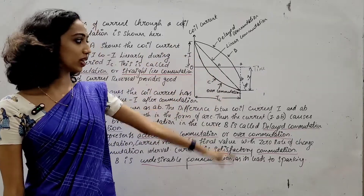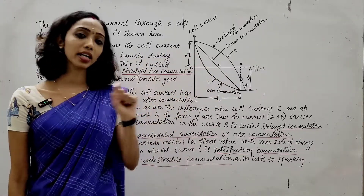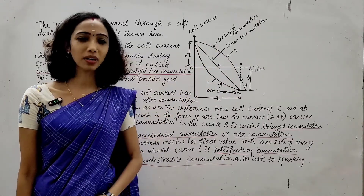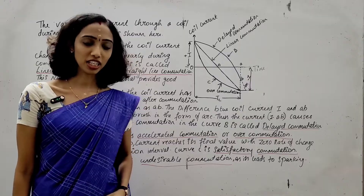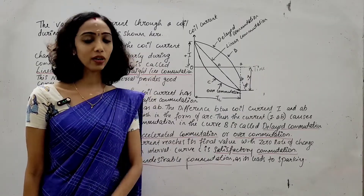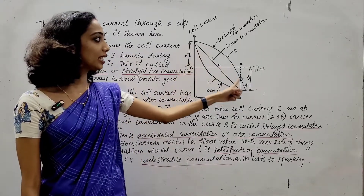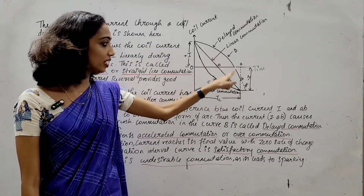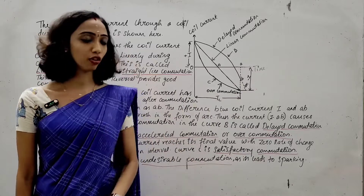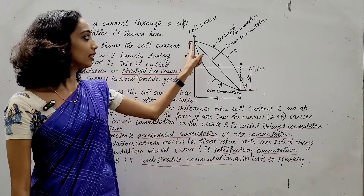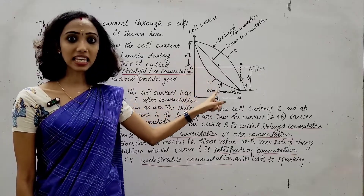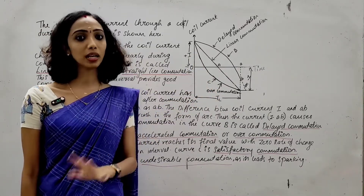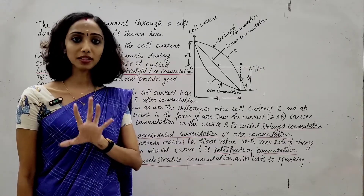Linear commutation is the line along the center. It is a very useful and desirable commutation. Delayed commutation cannot reach the final value and forms an arc. Graph C is over-commutation, which is a good commutation.